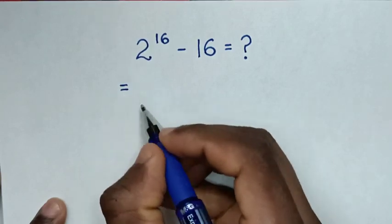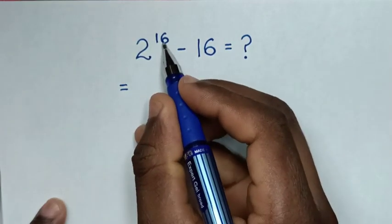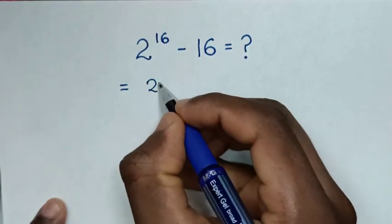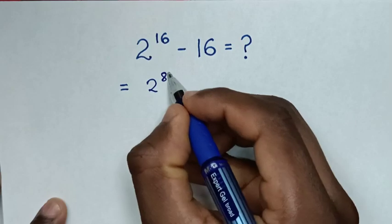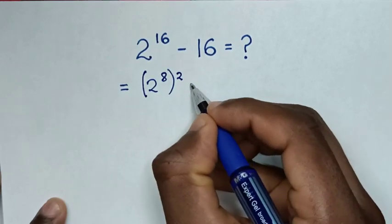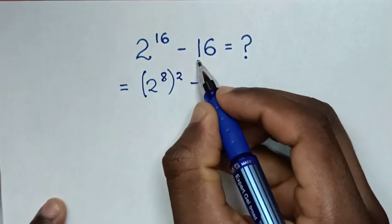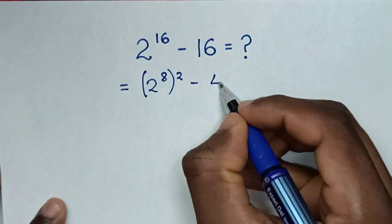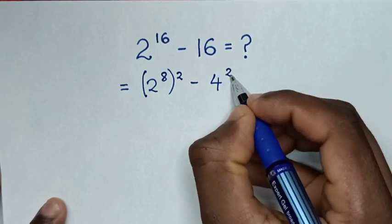So it would be equal to: 2 to the power of 16 written as a square is the same as (2^8) squared, then minus 16 written as a square is the same as 4 squared.